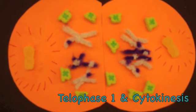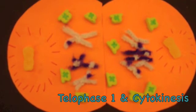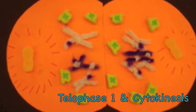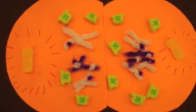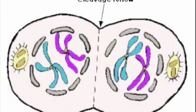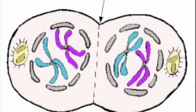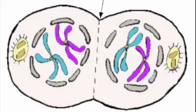In telophase I, the two new haploid cells form. Each cell contains a complete haploid set of replicated chromosomes and each chromosome contains a set of sister chromatids. In animal cells, cleavage furrow splits the two cells by pinching in from the outside. In plant cells, a new cell plate forms.